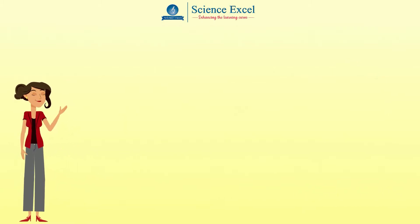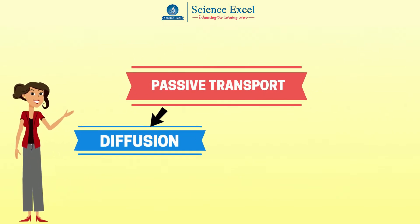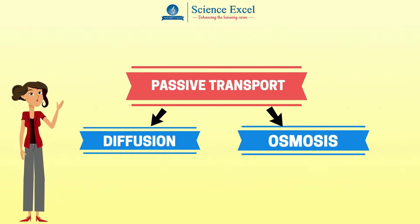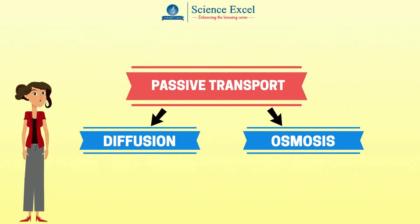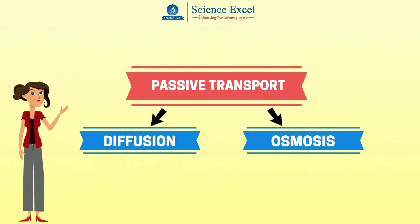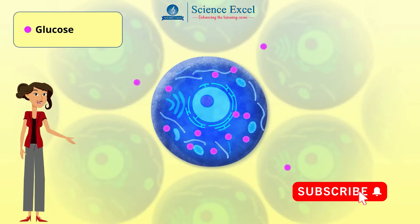In our earlier tutorials we dealt with passive transport, that is diffusion and osmosis, which is a great way for moving molecules into or out of a cell. It's easy and all the cell has to do is let the molecules diffuse in or out from a higher concentration to a lower concentration. But it doesn't work in every situation.